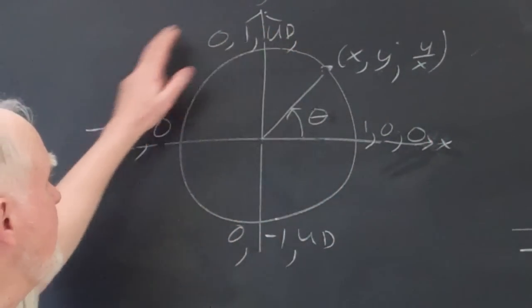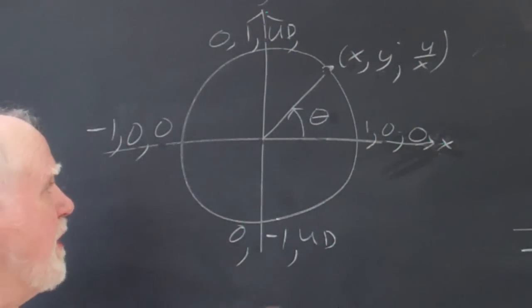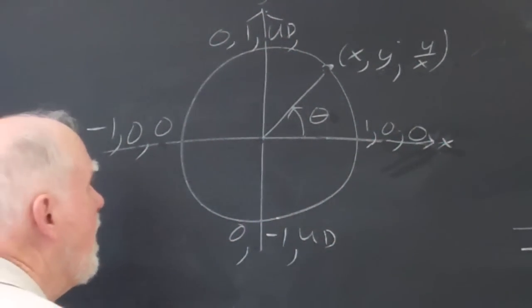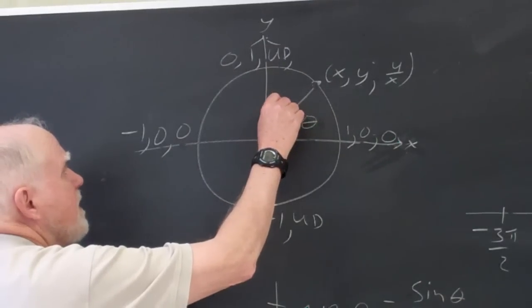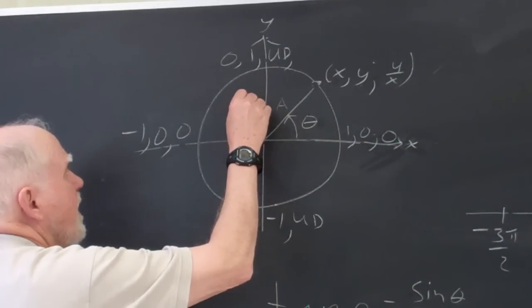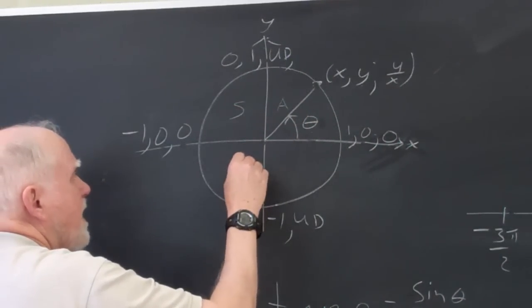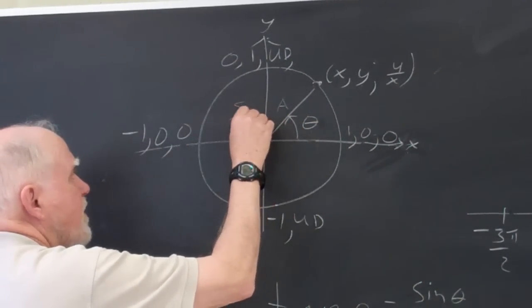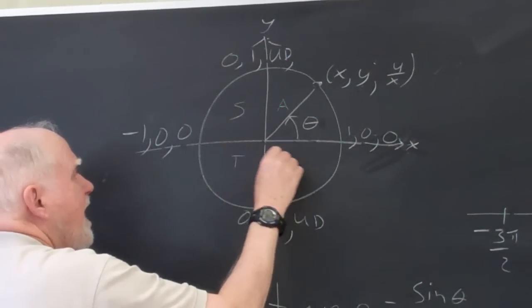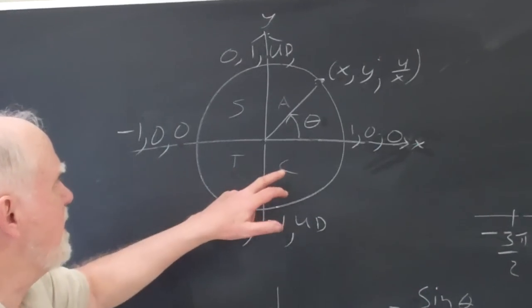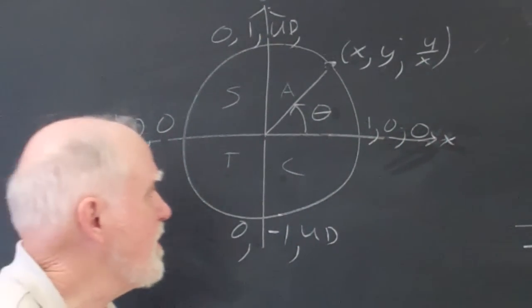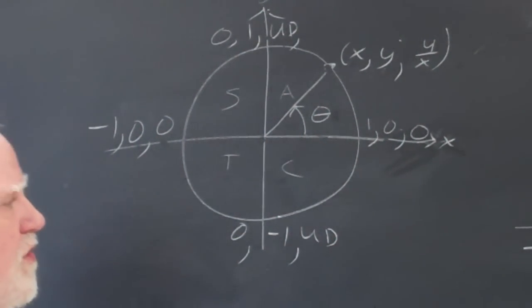I've got some multiples of 90 here because I didn't want to crowd it all up. All of them are positive here, only the sine is positive here. All students take calculus — only the tangent is positive here and only the cosine is positive in that quadrant.